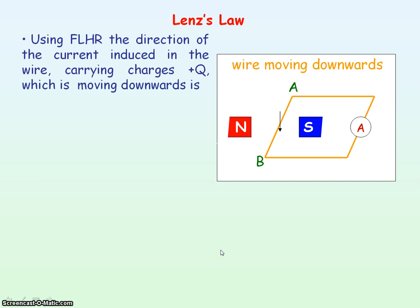We take the first finger of our left hand, which represents the direction of the magnetic flux density — from the north pole to the south pole — so we point it to the right. We take the second finger of our left hand, which represents the direction in which positive charges are moving — they're moving downwards — so we point it vertically downwards. You'll see the thumb, which represents the direction of the magnetic force on those charges, is pointing out of the plane of the screen, or in this case, towards point B.